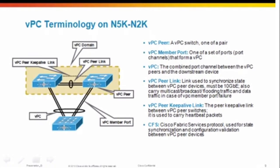The VPC peer link is the link used between the VPC peers to synchronize the state and to carry multicast, broadcast, floating traffic, and data traffic in case of VPC member port failure. There's also the VPC peer keep-alive link, which carries a heartbeat and makes sure that the other switch is alive. Finally, CFS stands for Cisco Fabric Services Protocol, and it is used for state synchronization and configuration validation between the VPC peer devices.